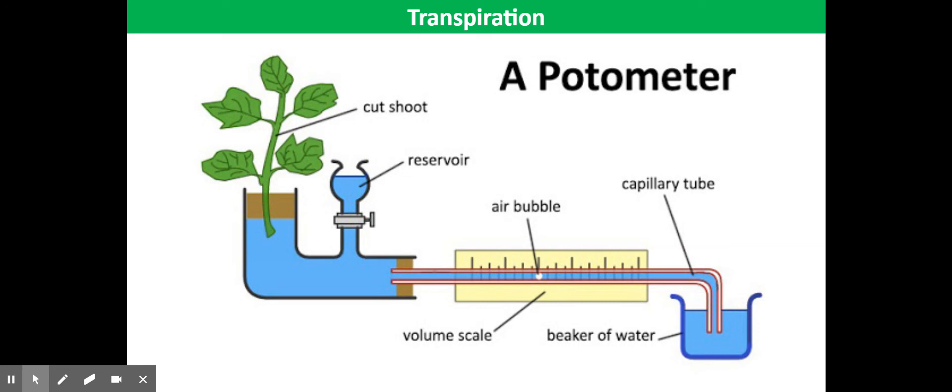You should cut the stem at an angle to provide a large surface area in contact with the water. And you should set it up under water to make sure there are no air bubbles inside the apparatus.